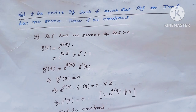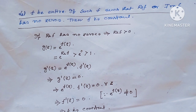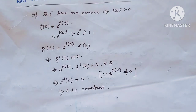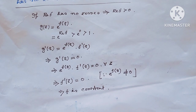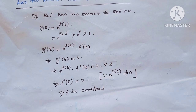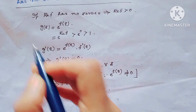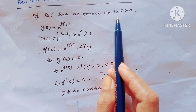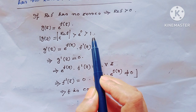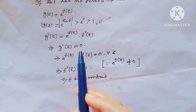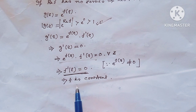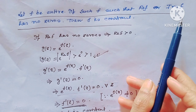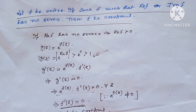Next question: if F = U + iV is entire and Re(F) or Im(F) has no zeros, then F is constant. If Re(F) has no zeros, then Re(F) > 0. Consider g(z) = e^{F(z)}: then |g(z)| = e^{Re(F)} > e^0 = 1. From g′(z) we can deduce F′(z) = 0, meaning F is constant.